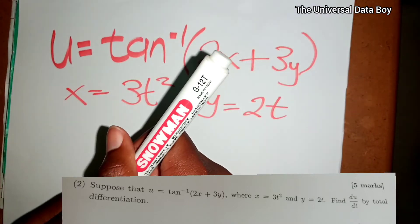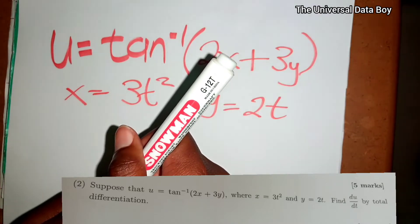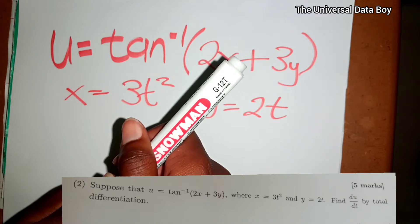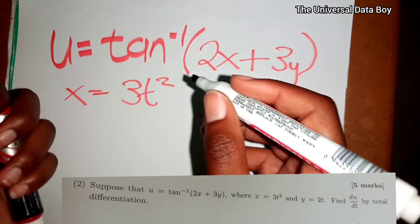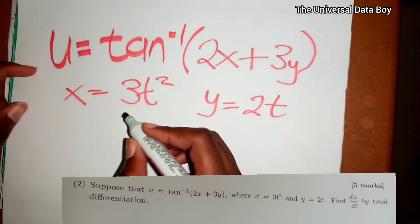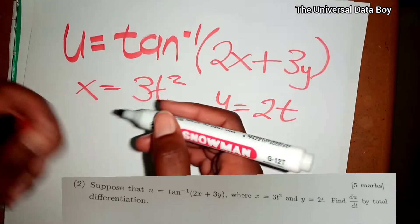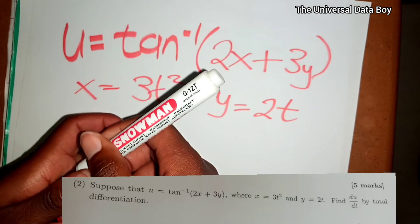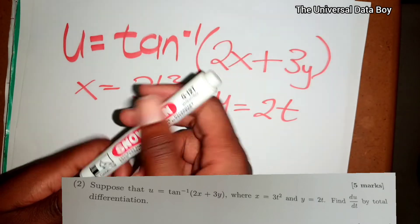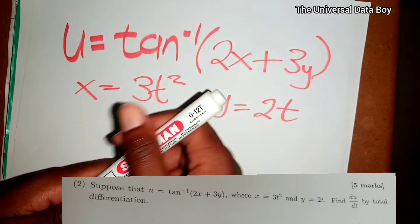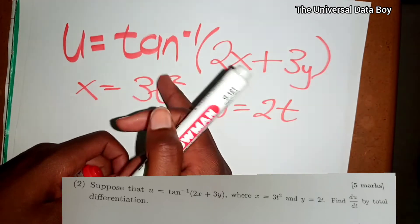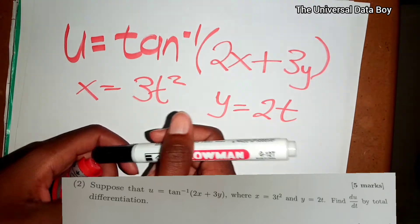We are going to be going over question 2 of test 2. We are being told to find the total derivative with respect to t of this equation.